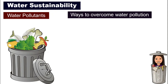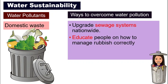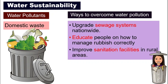The first water pollutant is closest to us — that is domestic waste, the one that we produce from our home. To overcome that, we should first upgrade sewage systems nationwide. We can also educate people on how to manage our rubbish more correctly, and improve sanitation facilities especially in rural areas.